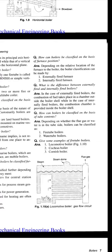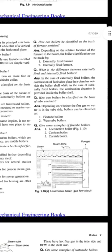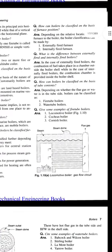How can boilers be classified on the basis of tube contents? Depending on whether flue gas or water is on the tube side, boilers can be classified as fire tube boilers and water tube boilers. Examples of fire tube boilers include the locomotive boiler, Cochrane boiler, and Cornish boiler.